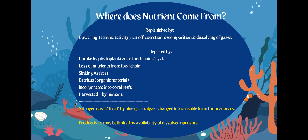How are nutrients depleted? When photosynthesis uses carbon dioxide, that's depleting some nutrients. There is also loss of nutrients in a food chain — we don't eat every part of an organism. Many organisms leave some food behind, which means those nutrients aren't cycled back in. Feces and sinking feces also deplete nutrients. Detritus organic material depletes nutrients, and it's incorporated into coral reefs, which are part of our food chain and food web system.